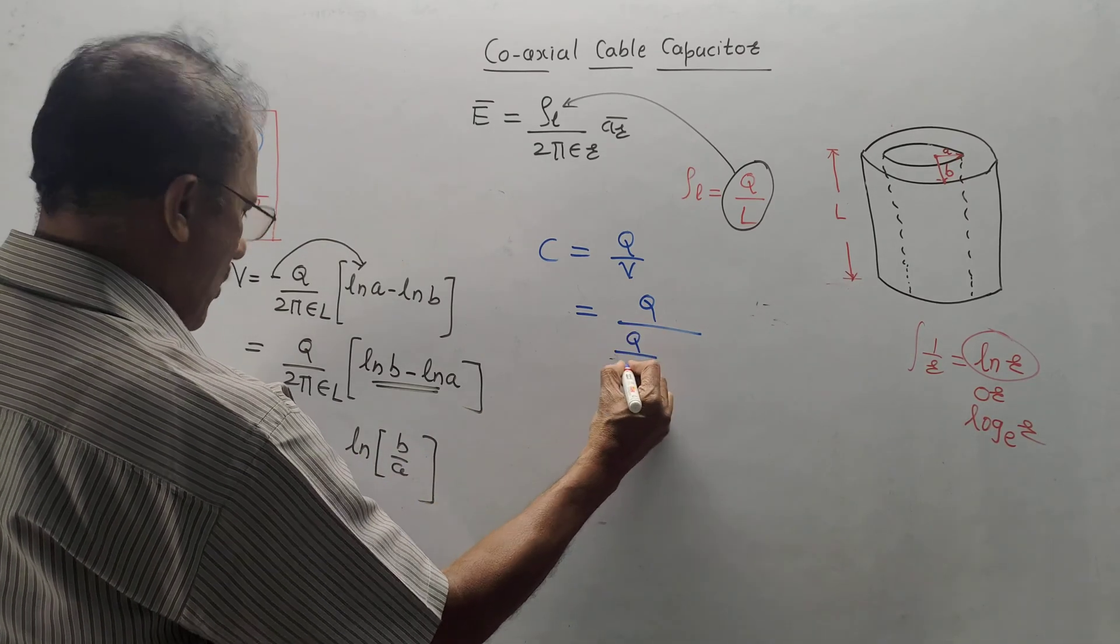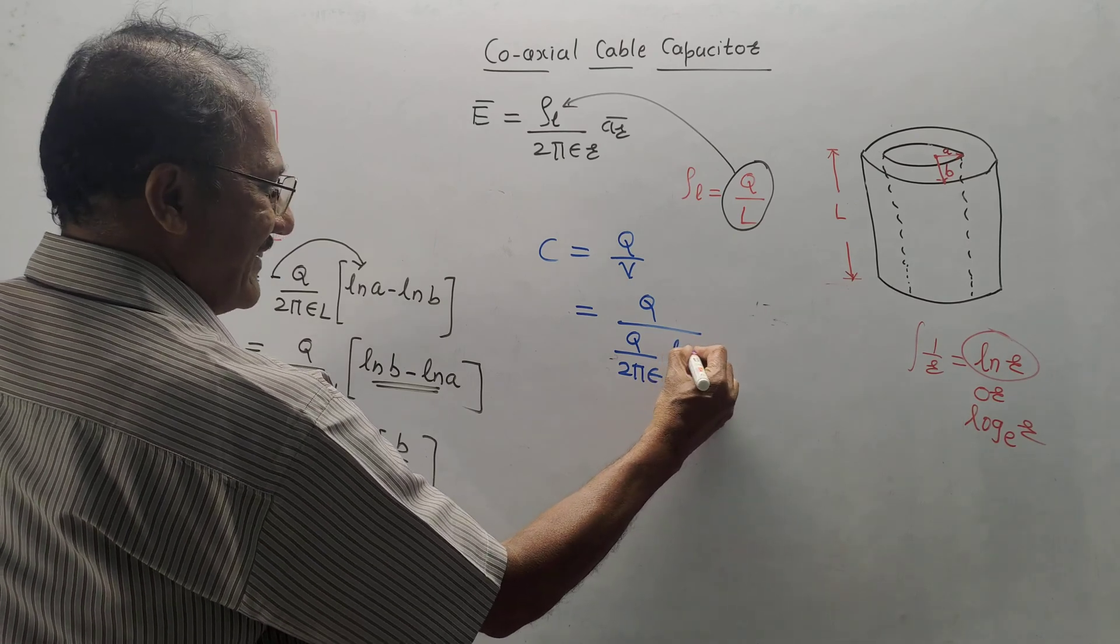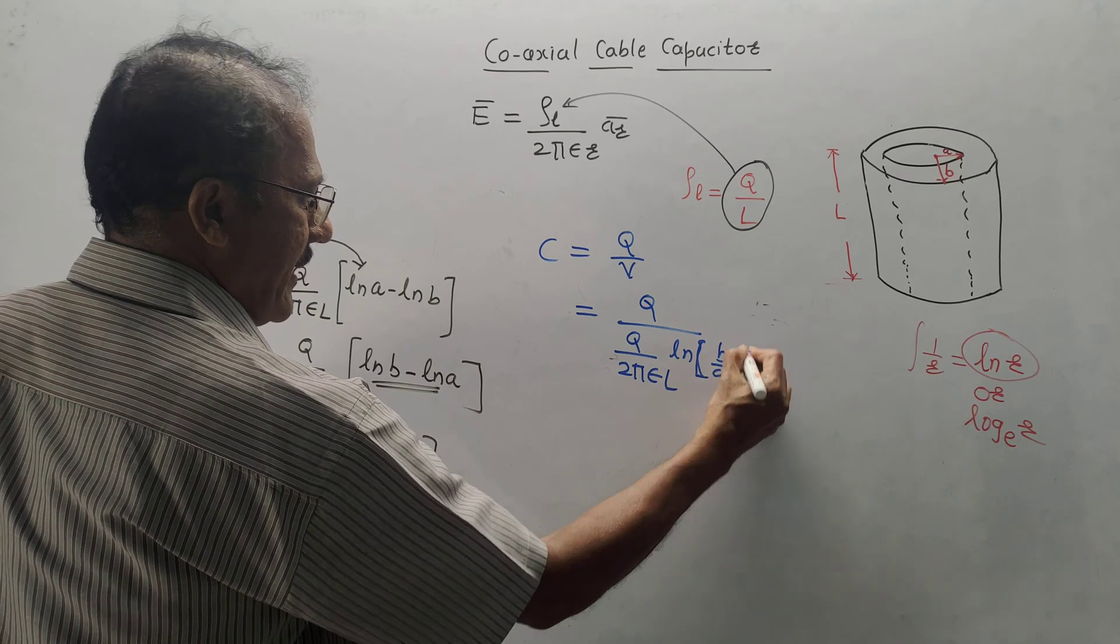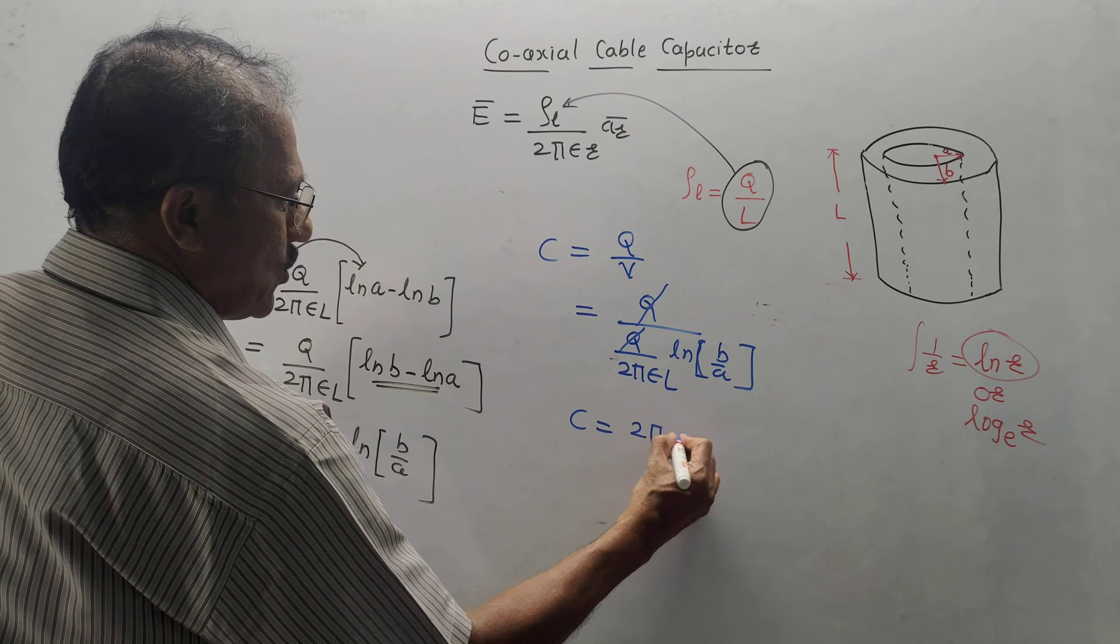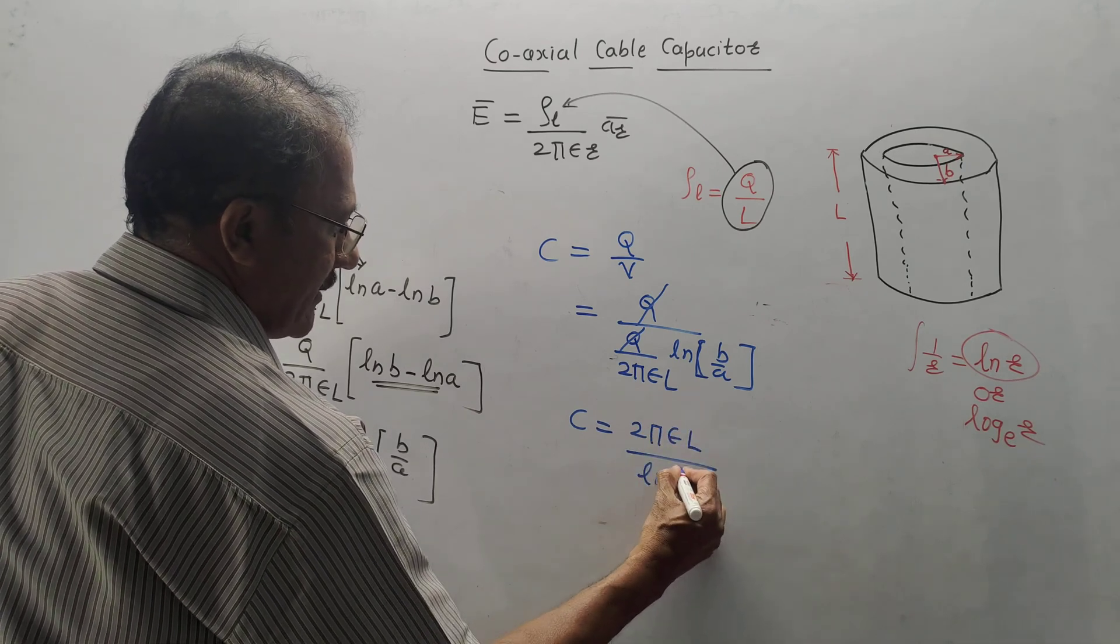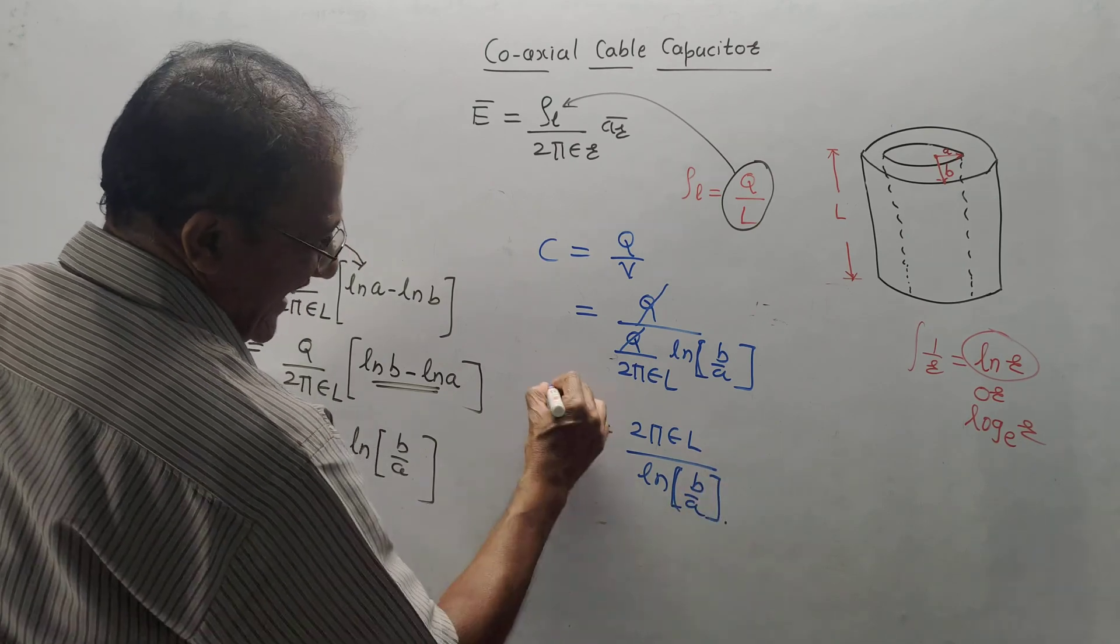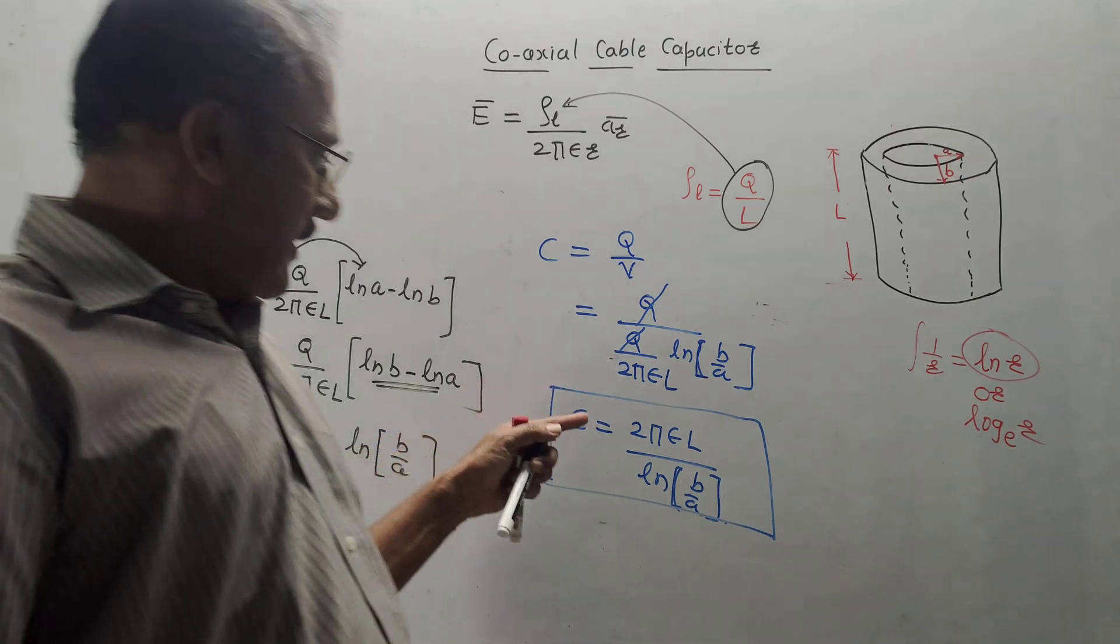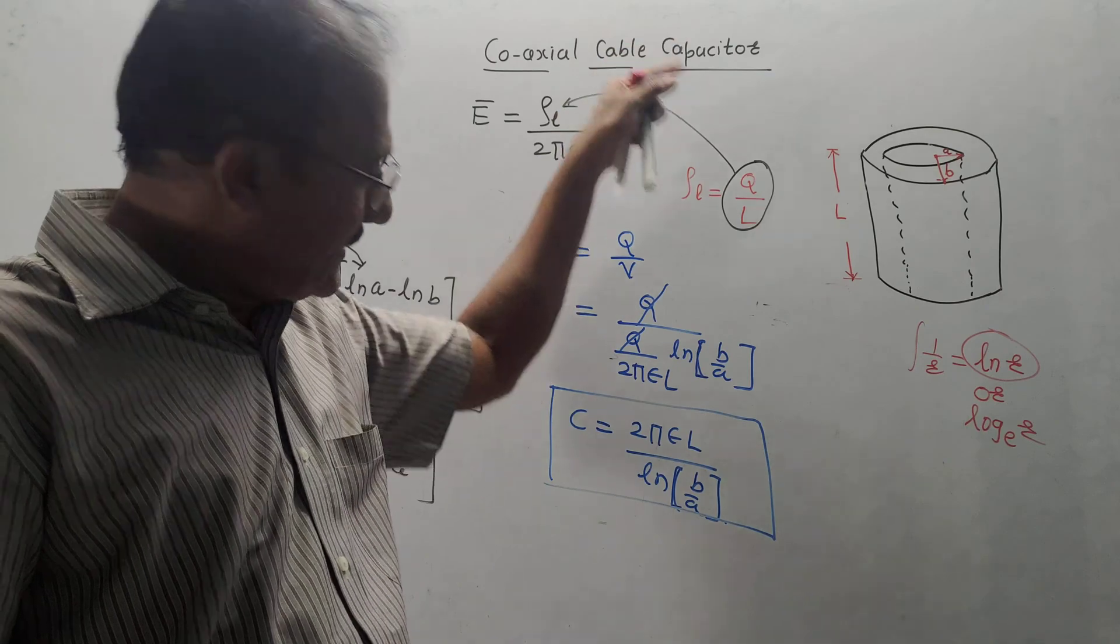So, it is Q upon 2 pi epsilon L L N, that is natural log of B by A. So, this Q gets cancelled. So, equation of C will be 2 pi epsilon L upon L N B by A. This is the final equation, derivation for the capacitance in case of coaxial cable capacitor or cylindrical capacitor.